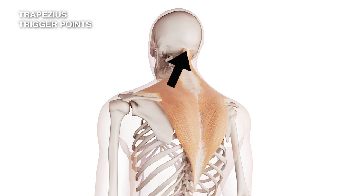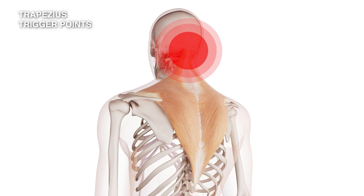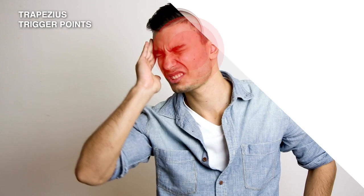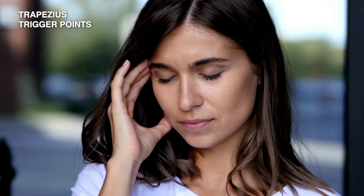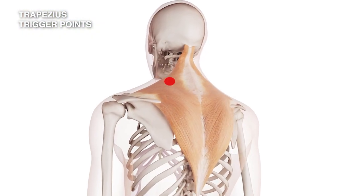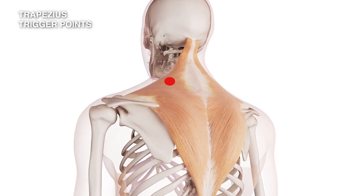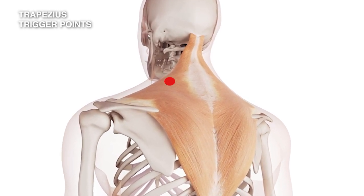When this trigger point becomes active, it refers pain in a very particular pattern: upwards to the base of the skull, vaguely into the back of the head, and much more strongly into the temple on the same side. This is the typical tension headache — an incredibly common complaint — and trigger point number one is one of its most important causes.